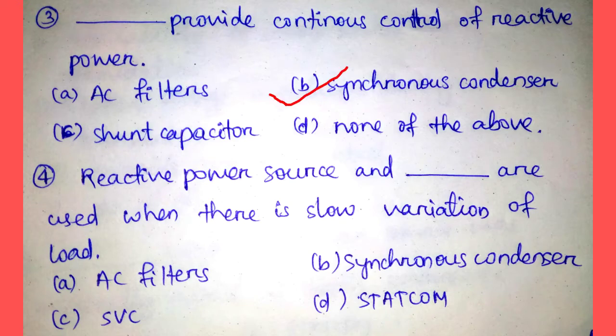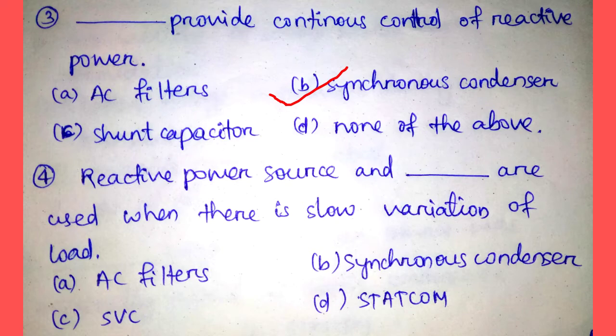Synchronous condenser. Question number four: Reactive power source and dash are used when there is slow variation of load. Option A: AC filters, Option B: synchronous condenser, Option C: SVC, Option D: STATCOM. The reactive power source and AC filters are used when there is slow variation of load. Hence the correct answer is Option A, AC filters.